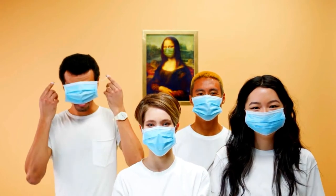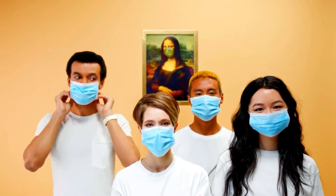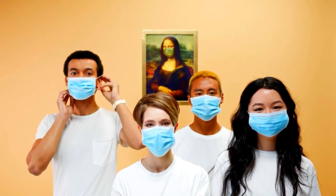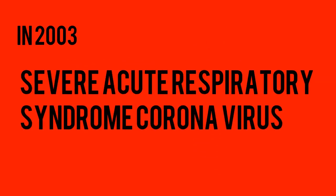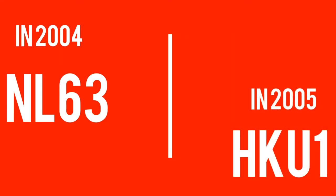This is not the first time humans have been exposed to corona. The first human coronaviruses are 229E and OC43. In 2003, severe acute respiratory syndrome coronavirus was identified in Asia. In 2012, Middle East respiratory syndrome was identified in Saudi Arabia. In 2004, human coronavirus NL63 was identified, and in 2005, human coronavirus HKU1 was discovered.